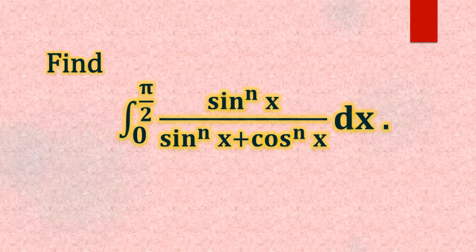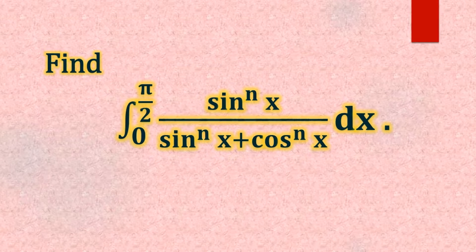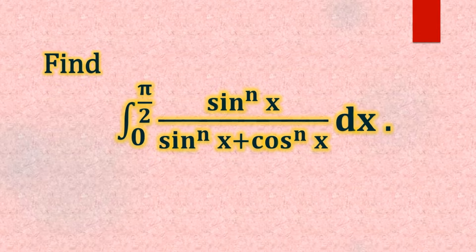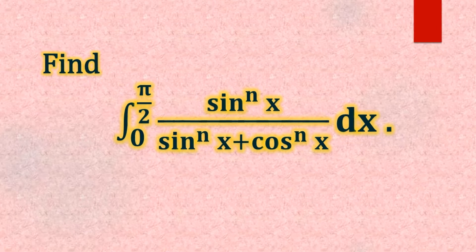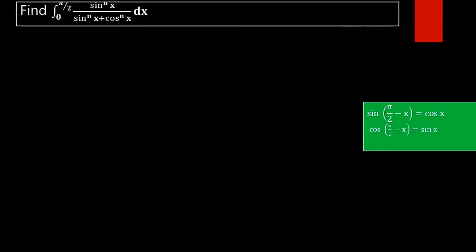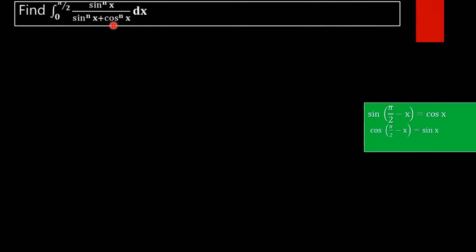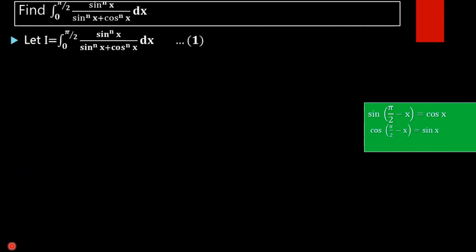Find the integral from 0 to π/2 of sinⁿx divided by sinⁿx plus cosⁿx dx. We have to find the value of this integral, that is sinⁿx divided by sinⁿx plus cosⁿx dx from 0 to π/2. Take I equal to the integral from 0 to π/2 of sinⁿx divided by sinⁿx plus cosⁿx dx.